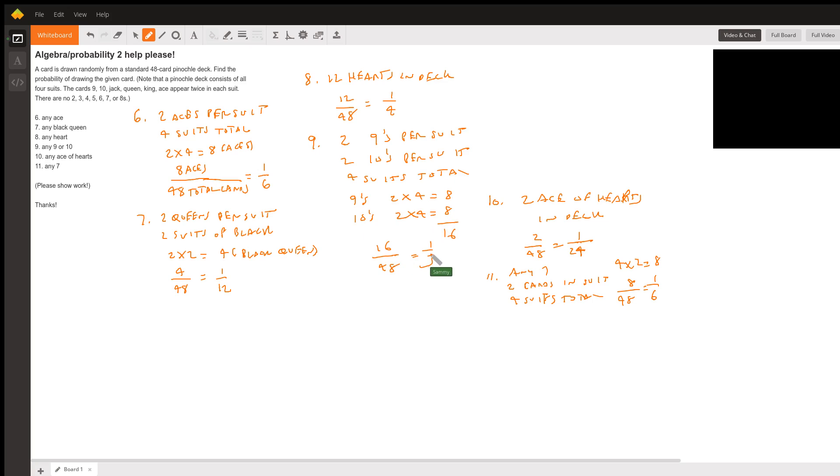Number 10: any aces of hearts. There are two aces of hearts in the deck, so it's just 2 divided by 48. It's one twenty-fourth. That's number 10.